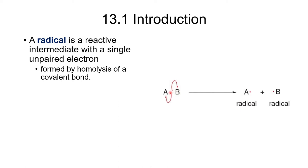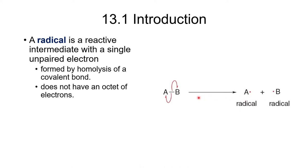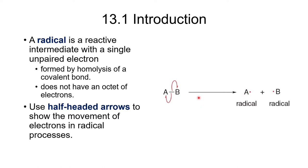In homolysis, we break the bond evenly so one electron goes to each atom. Radicals can't have a full octet because they have an odd number of electrons around each atom. When drawing radicals in mechanisms, we use half-headed arrows — the curved arrow formalism we discussed earlier, sometimes called fish hooks.